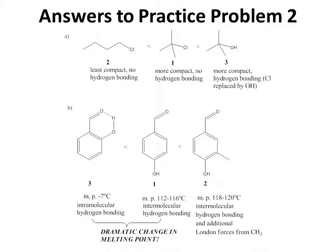Answers to Practice Problem 2. In Part A, the lowest melting compound will be the least compact, which is compound 2 — it has no hydrogen bonding because it has a Cl. Compound 1 is more compact because all the methyl groups are arranged around the central carbon, so it's more like a sphere, but it still only has a Cl, so again no hydrogen bonding. Then we get to compound 3, the highest melting compound, where OH is replacing Cl, so there is intermolecular hydrogen bonding. It has the same compactness as compound 1, but greater attractive forces and greatest compactness, giving it the highest melting point.